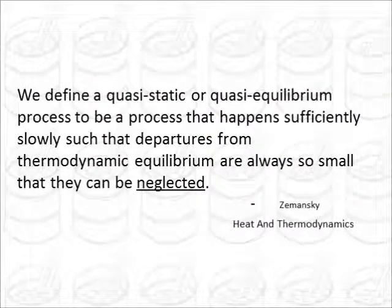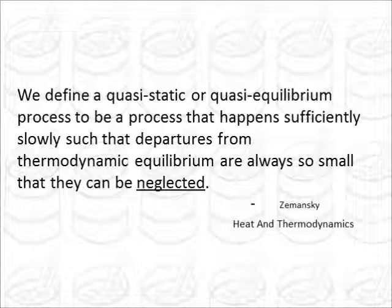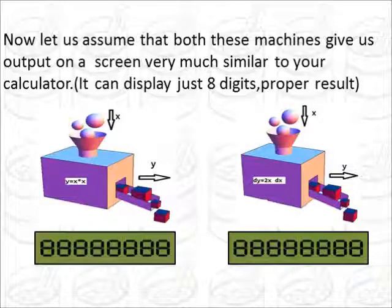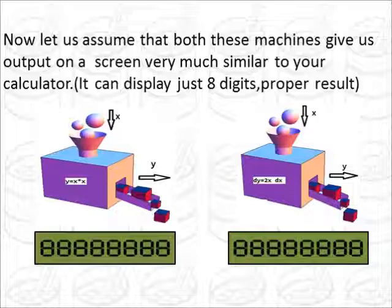Okay. Now concentrate on this statement. We define a quasi-static or quasi-equilibrium process to be a process that happens sufficiently slowly that departures from thermodynamic equilibrium are always so small that they can be neglected. Now concentrate on the word neglected. So how do we neglect these quantities? Let's see. Now let us assume that the machines which we had earlier give output on a screen, a screen that is very much similar to your calculator screen. By the way, this screen has a limitation that it can display just 8 digits.